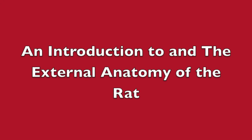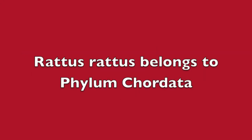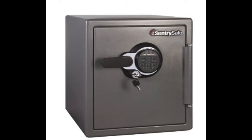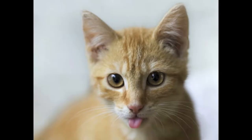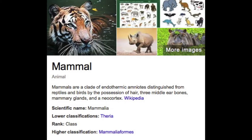The external anatomy of the rat. Rattus rattus belongs to Phylum Chordata. The morphological differences between rats, whales, and cats make it easy for us to differentiate them from one another. So here's the big question: what do these species have in common? They are all mammals.